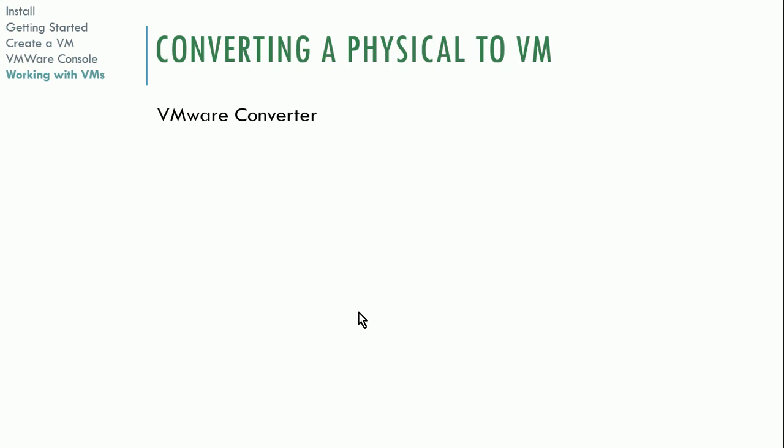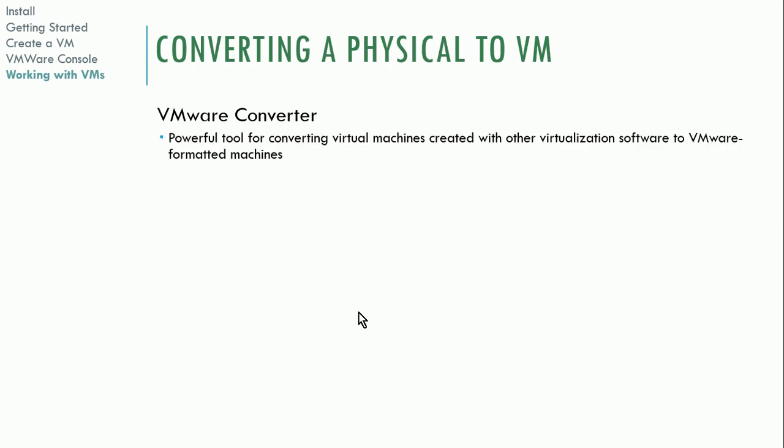With VMware, you can convert your physical computer to a virtual machine using VMware's converter included in Workstation. It will basically snapshot that computer into a virtual machine. This is a great tool if you're migrating a physical environment to a virtual environment, or going to the cloud — since most cloud providers support importing virtual machines. You could use the VMware converter to convert a physical server to a virtual machine and then upload it to the cloud.